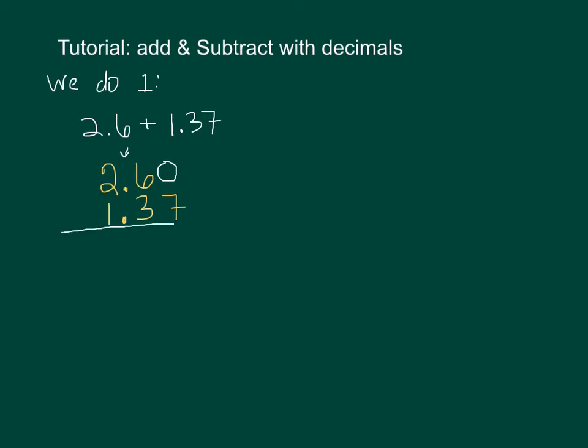Alright, so once we've lined up the place values it's just normal addition and that was fine. Zero plus seven is seven. Six plus three is nine. Another thing some people forgot is bring that decimal down. You've got to put the decimal in the answer, so bring it down and two plus one is three, so the answer is 3.97.